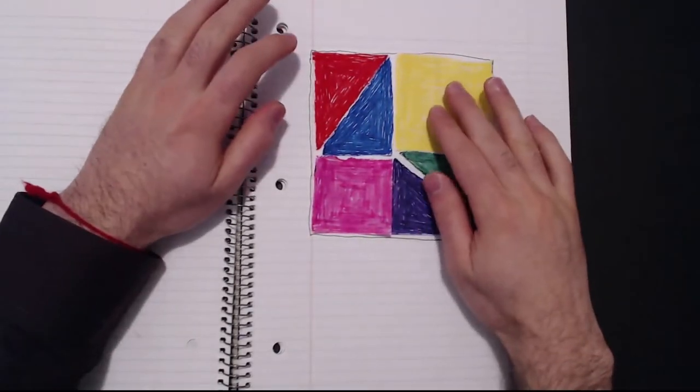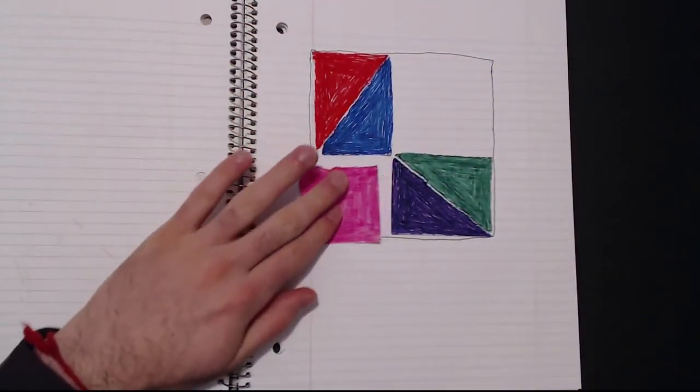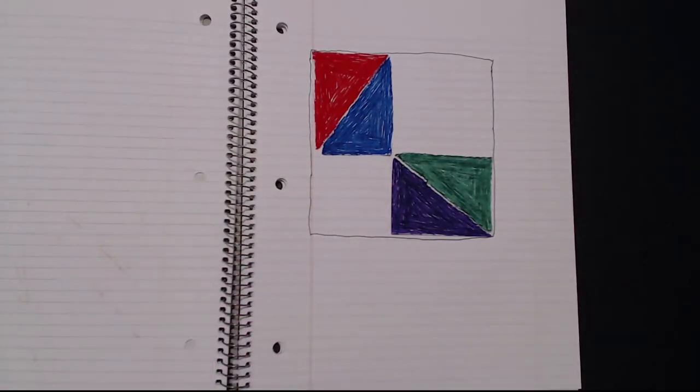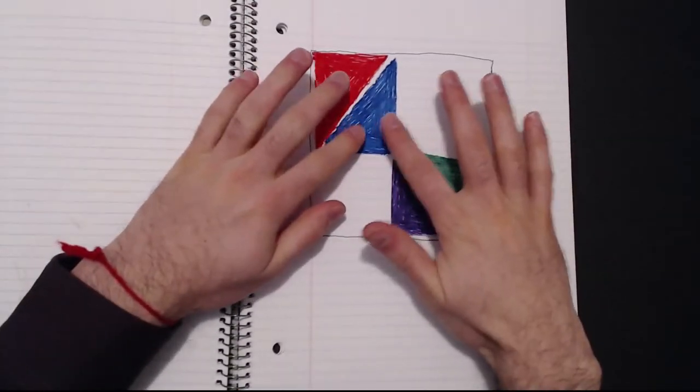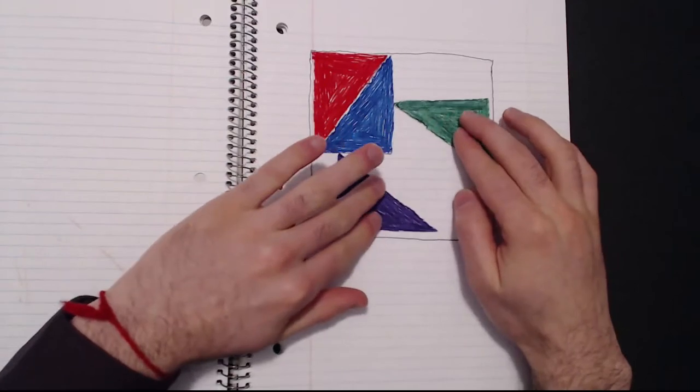Now let's simplify this a little. I'll take out both of these squares so that we just have these two rectangles. Now there's a bit more wiggle room you can move these triangles around with inside of this large square.